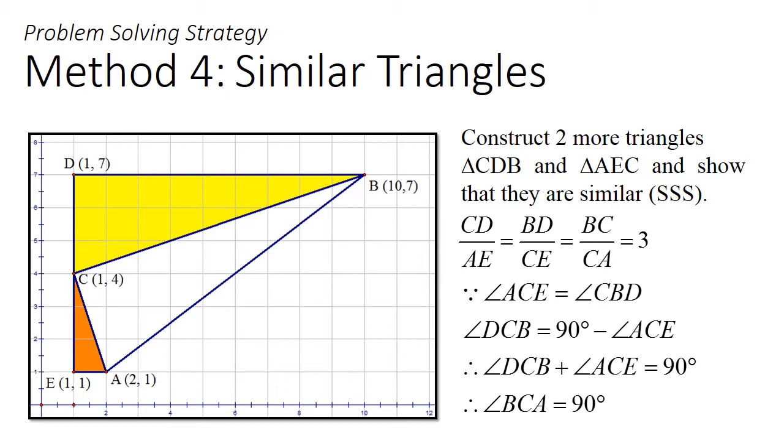As the sum of angles on a straight line is 180, this must mean that angle BCA has to be 90 degrees too.